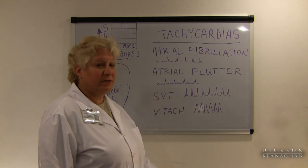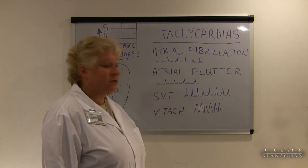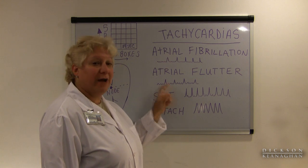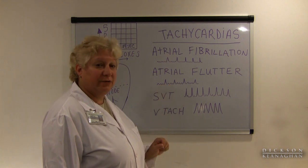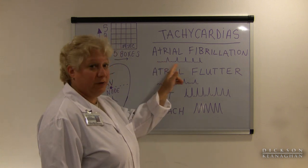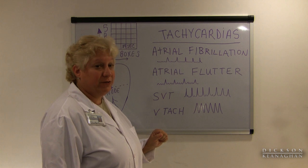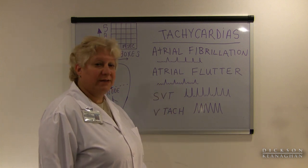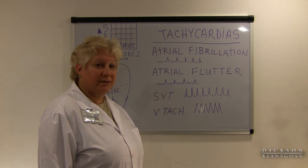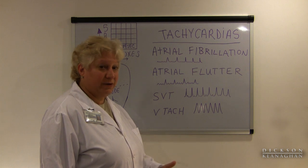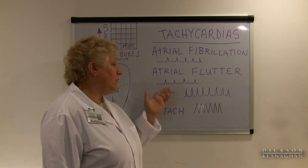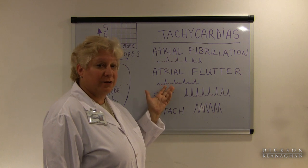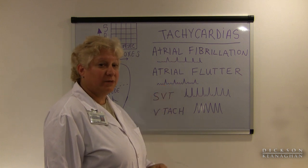Atrial flutter is a very similar rhythm to atrial fibrillation. It is one irritable focus firing rapidly in the atrium, compared to multiple irritable foci in atrial fibrillation. Again, your AV node lets down the beats — the ventricular response could be slow, moderate, or very rapid. The treatments are the same kind as for atrial fibrillation.